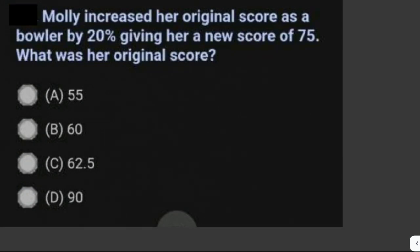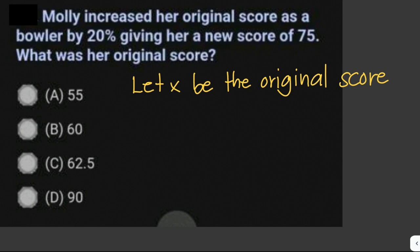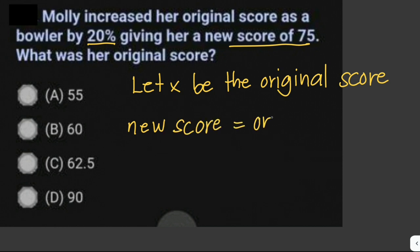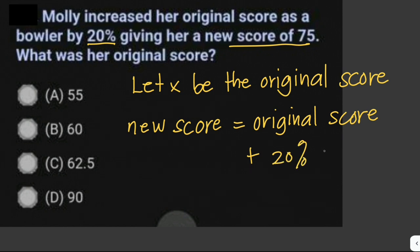Molly increased her original score as a bowler by 20%, giving her a new score of 75. What was her original score? The unknown is the original score; let X be the original score. The new score equals the original score plus 20% of the original score.